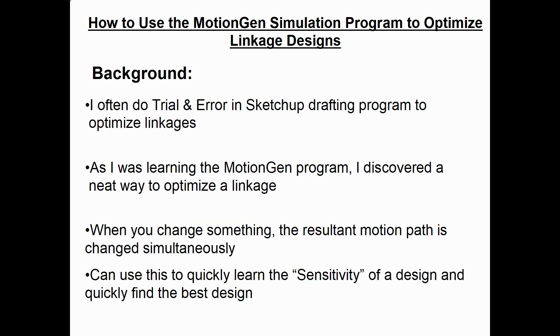In the past I've often used the SketchUp drafting program, doing a trial and error approach to optimize linkage designs until I get one that works. But as I was learning about MotionGen, I discovered a very neat way to optimize linkages. In this program, when you change something, the resultant motion path changes simultaneously. You can use this feature to quickly learn the sensitivity of a design and find the optimum design for your application.